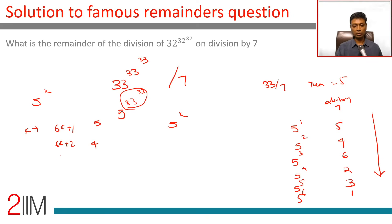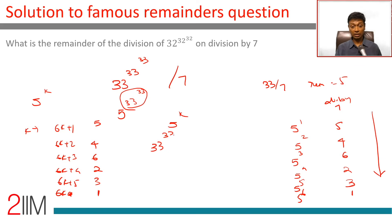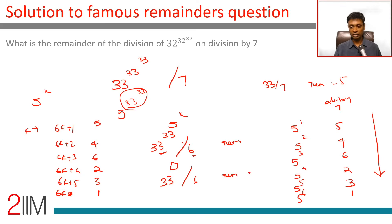So if k is of the form 6k+1, remainder is 5; 6k+2 gives 4; 6k+3 gives 6; 6k+4 gives 2; 6k+5 gives 3; 6k (or 6k+6) gives 1. Now our question is 33 power 33 divided by 6. Since 33 is a multiple of 3, it will never be a multiple of 6, so 33 power anything divided by 6 gives remainder 3. Therefore this number is of the form 6k+3, and the remainder is 6.